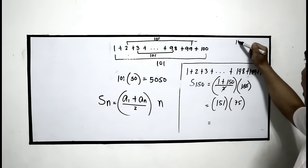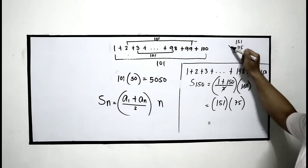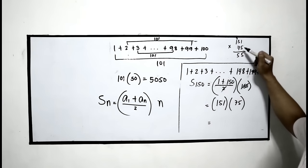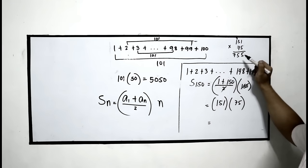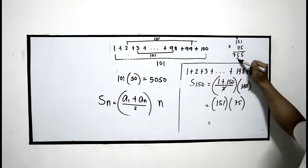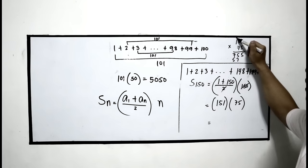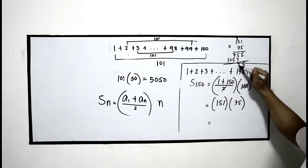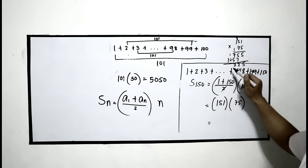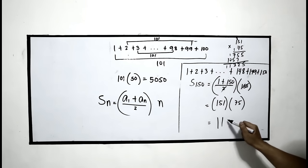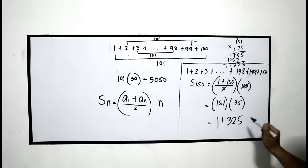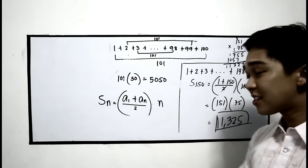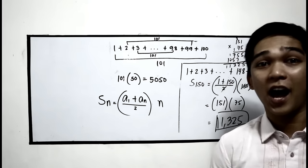Let us multiply 151 times 75. 5 times 1 is 5; 5 times 5 is 25, carry 2; 5 times 1 is 5 plus 2 is 7. Then 7 times 1 is 7; 7 times 5 is 35, carry 3; giving 10. Adding the results: the sum is 11,325. So if you are going to add 1 up to 150, the sum is 11,325. That ends our arithmetic series.